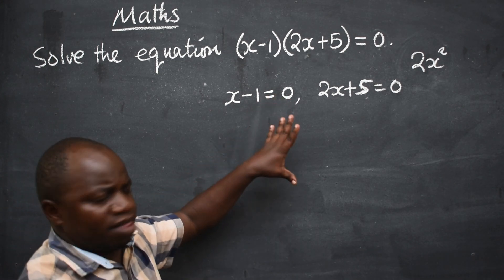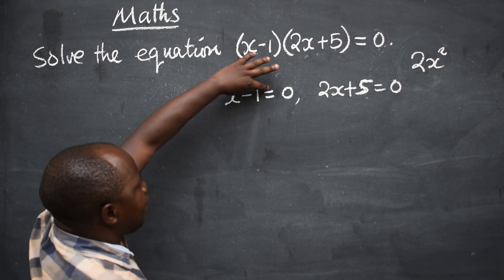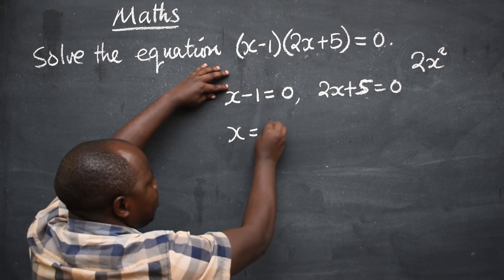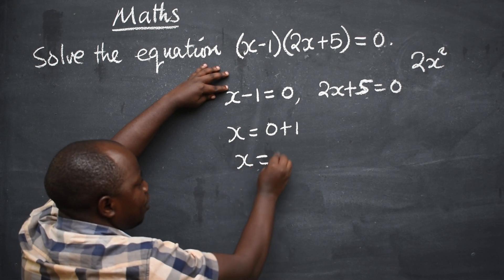Only apply this method if it is equated to 0. So this one here, now you are going to say x is equal to 0. Negative 1 will be positive 1. x will be equal to 1. That is the first answer.